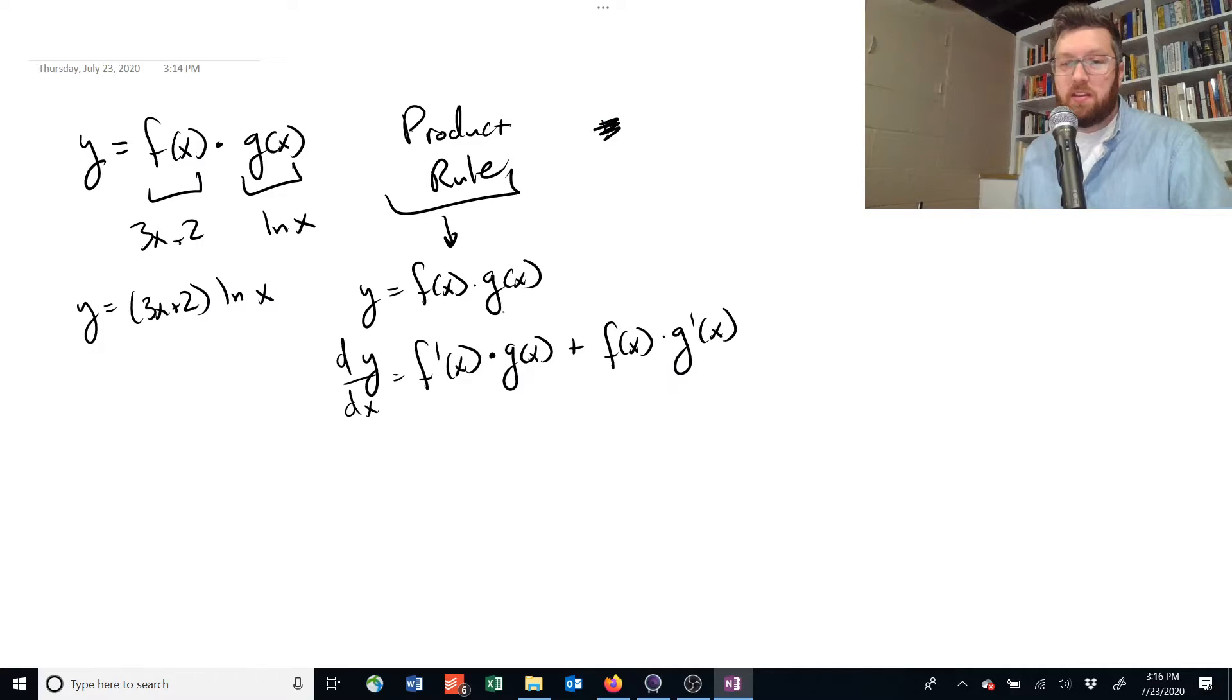You might think, why not, it should be equal to the derivative of them multiplied together, like f prime of x times g prime of x. It just isn't. It doesn't work that way. So this is the product rule, and if we're going to use this as our example,